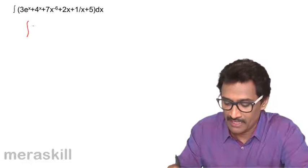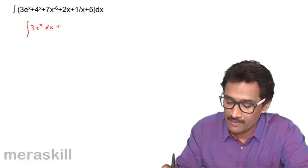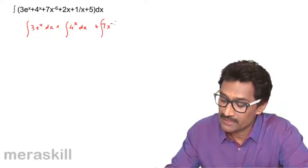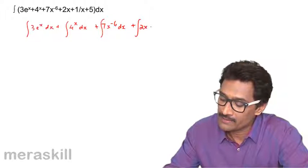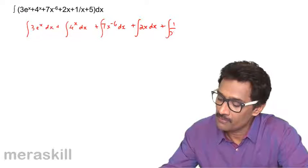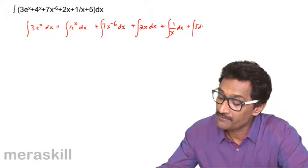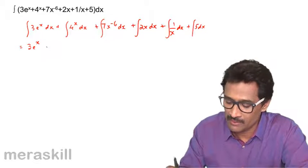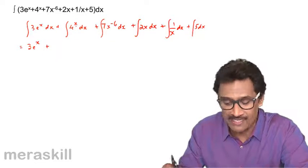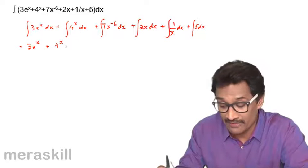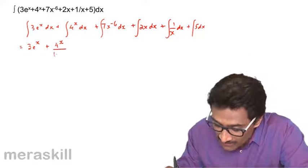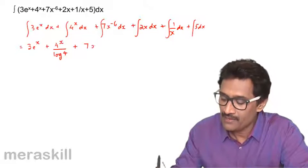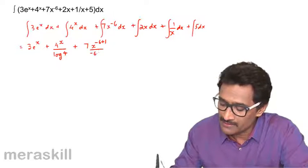Now for the next example, we write: 3eˣ dx plus 4ˣ dx, plus integral of 7x raised to minus 6 dx, plus integral of 2x dx, plus integral of 1/x dx, plus integral of π dx. The first term gives 3eˣ. For 4ˣ, note that in differentiation we multiply by log a, so in integration we divide by log a — here it becomes 4ˣ upon log 4. Then 7x raised to minus 6 plus 1 upon minus 6 plus 1.